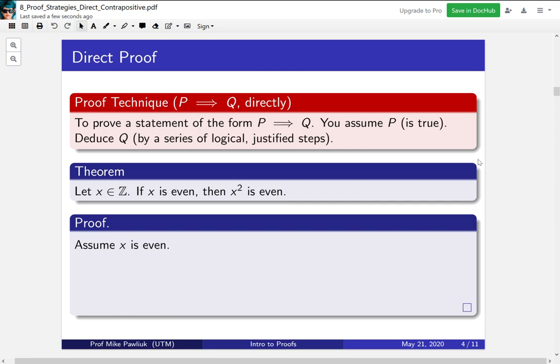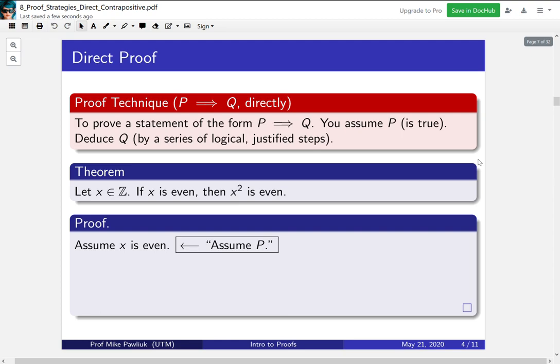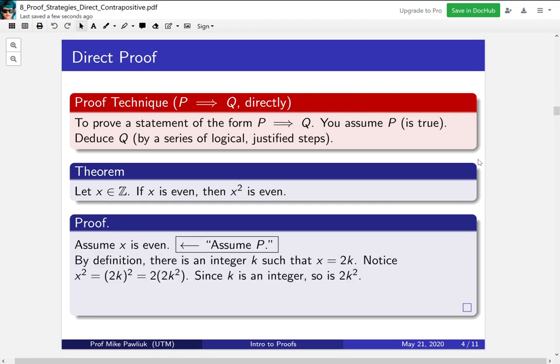Our proof starts with assume x is even. That's the if part, the P part of P implies Q. And now we'll make a series of logical, justified steps to get to Q. This is a definition unwinding proof. What does it mean for x to be even? Well, we've seen these kinds of proofs before. You use the definition to get an integer k such that x is 2k.